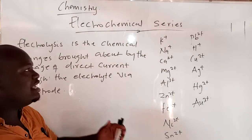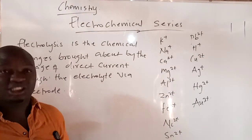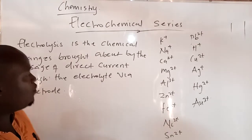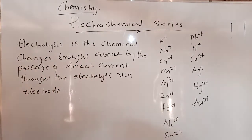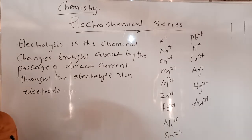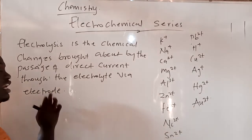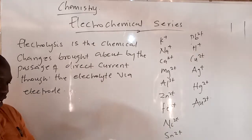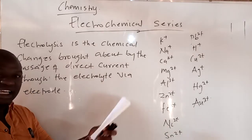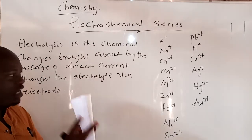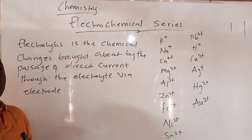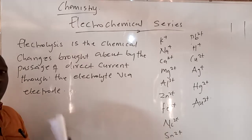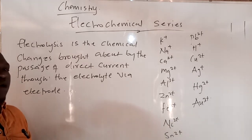I will start by introducing electrolysis and what electrolysis means. Electrolysis is the chemical changes brought about by the passage of direct current to the electrolyte via the electrodes. You have to know that the electrodes have two terminals: the positive terminal of an electrode is called the anode, and the negative terminal of an electrode is called the cathode.